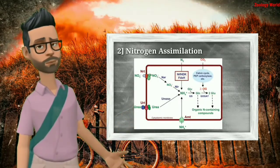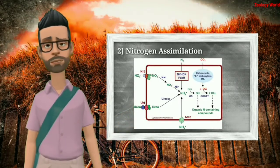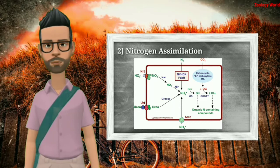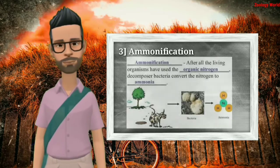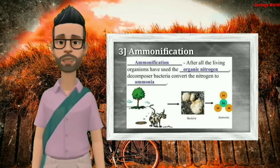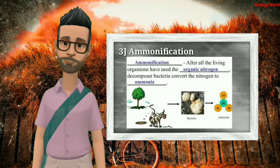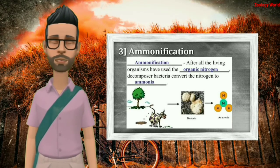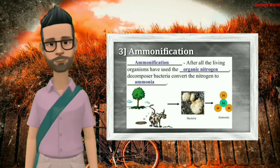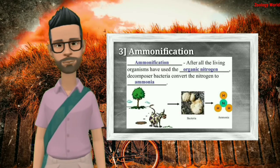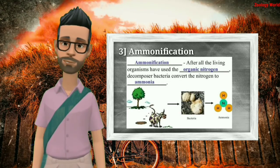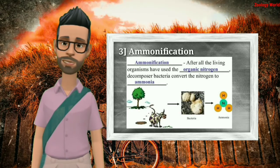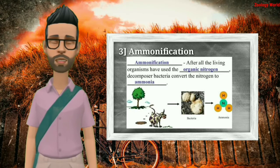In nitrogen assimilation, nitrate constitutes the source of nitrogen for assimilation by green plants. In ammonification, proteins of animals are excreted in the form of urea, uric acid, or ammonia. Proteins of dead plants and animals are broken down into ammonium ions, and this process is called ammonification.